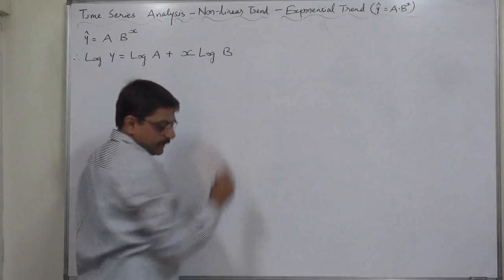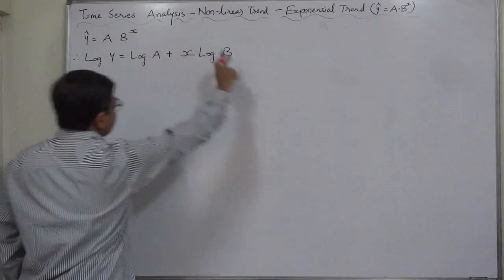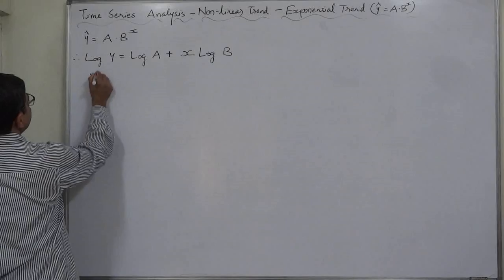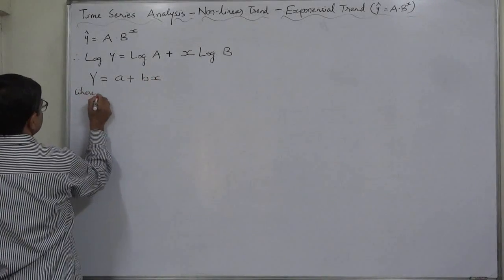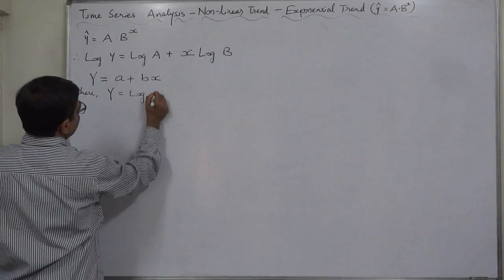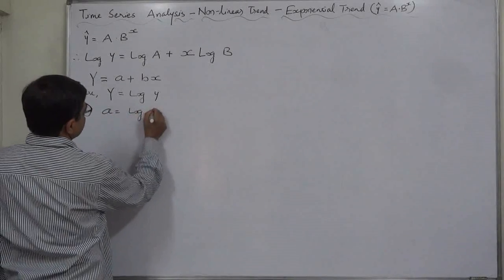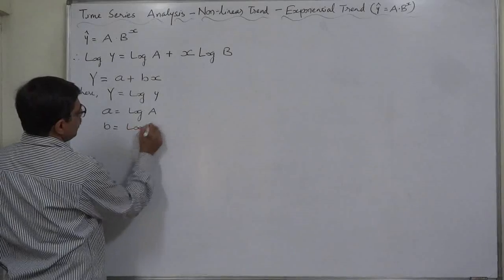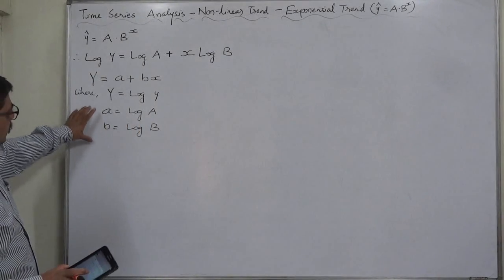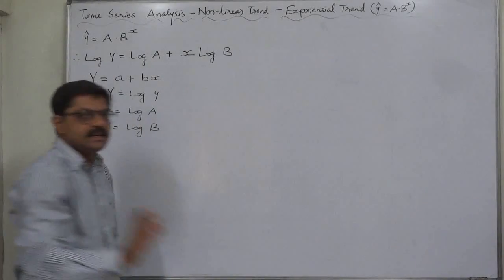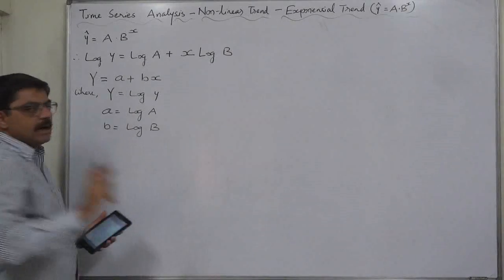This linear form is log y equals log a plus x·log b. We use shorthand notation: capital Y equals small a plus small b into x, where capital Y equals log y, small a equals log of capital A, and small b equals log of capital B. This makes the process of solving much easier since we have converted it into a linear equation.